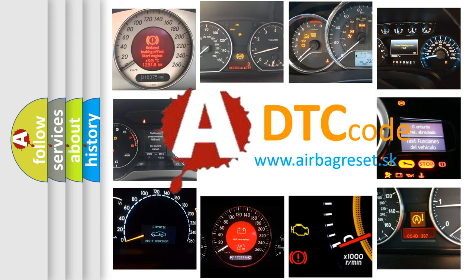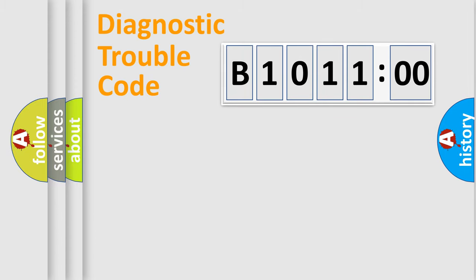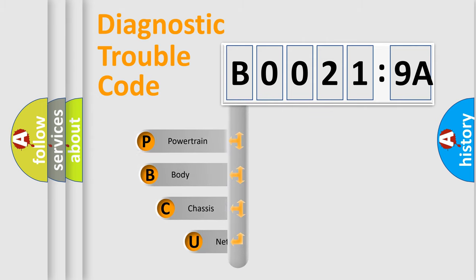We divide the electric system of automobile into four basic units: Powertrain, Body, Chassis, and Network. This distribution is defined in the first character code.